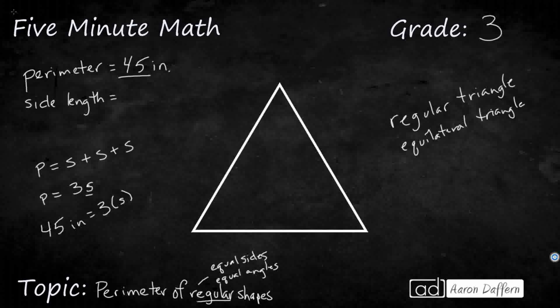So, 3 times what makes 45? Well, we might not know our facts up that far, but we can kind of get close. We can say 3 times 10 is going to get me 30. And 30 from 45, that's going to leave me 15. So, 3 times what makes 15? That's 3 times 5. So if you don't know your 3s past 12, you can say it looks like 10 and 5, that's going to make 15.